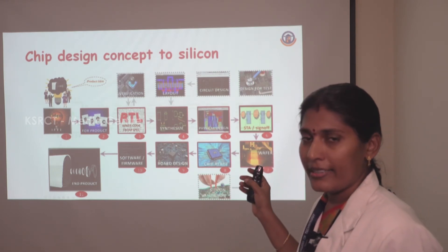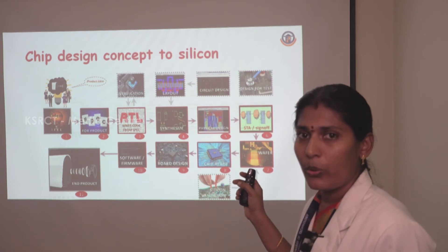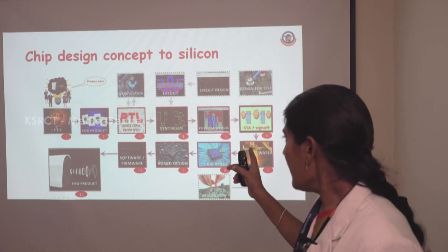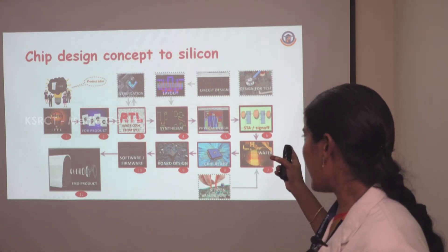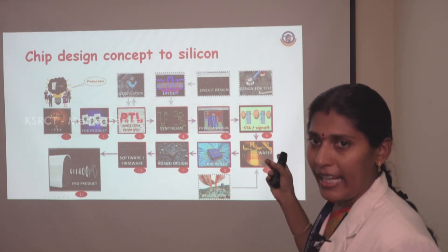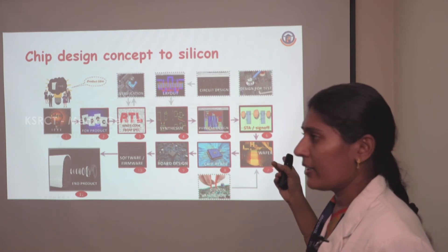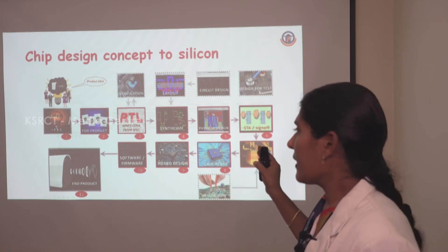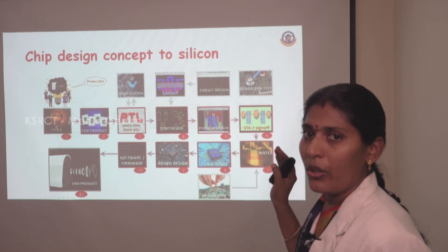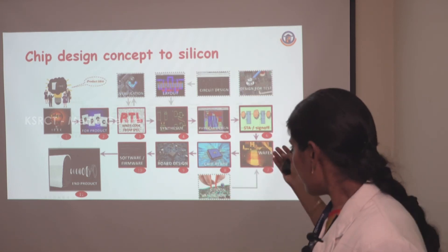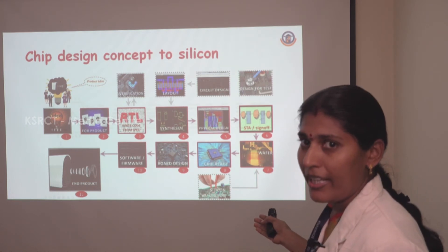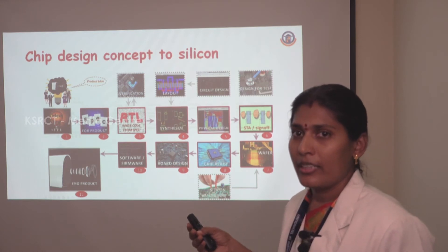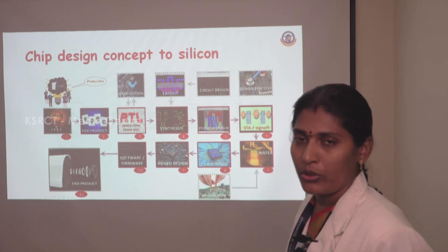In the physical design part — which includes floor planning, placement, and routing — once we meet all the constraints, we move to the next step: STA sign-off, which is Static Timing Analysis. Here we set up all timing parameters including setup time and hold time. Once we meet our requirements, the design is sent to the fabrication company, where our expected circuit is fabricated on a silicon wafer.